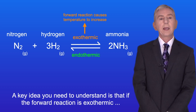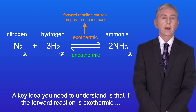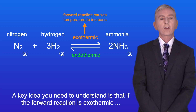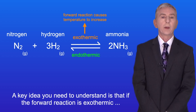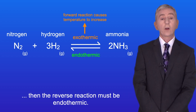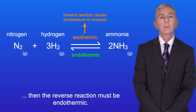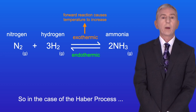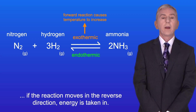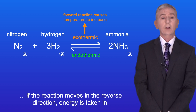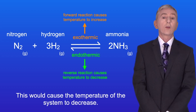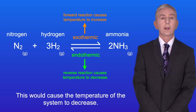A key idea you need to understand is that if the forward reaction is exothermic then the reverse reaction must be endothermic. So in the case of the Haber process, if the reaction moves in the reverse direction, energy is taken in and this would cause the temperature of the system to decrease.